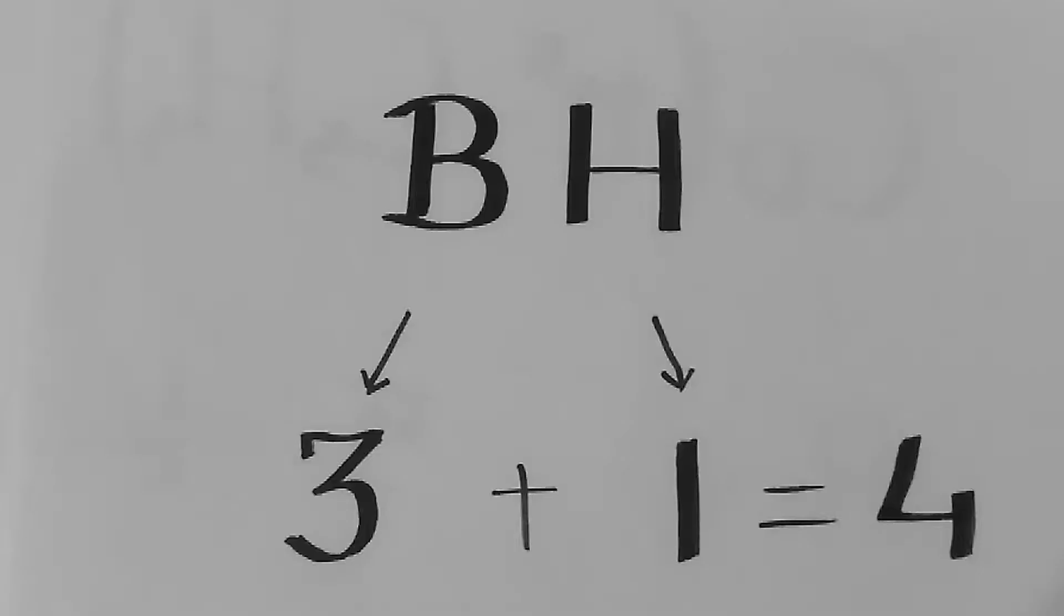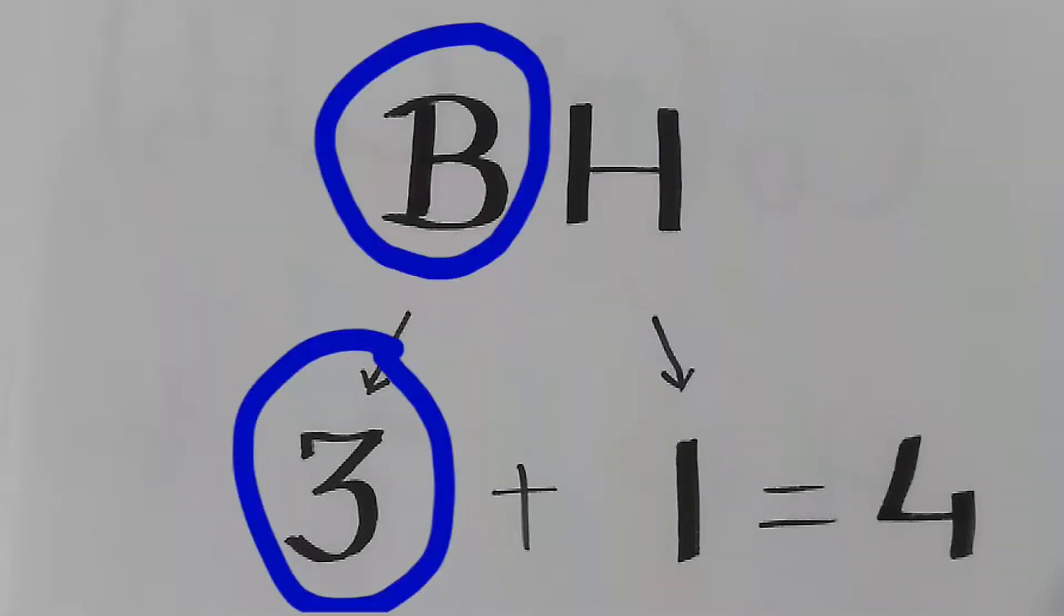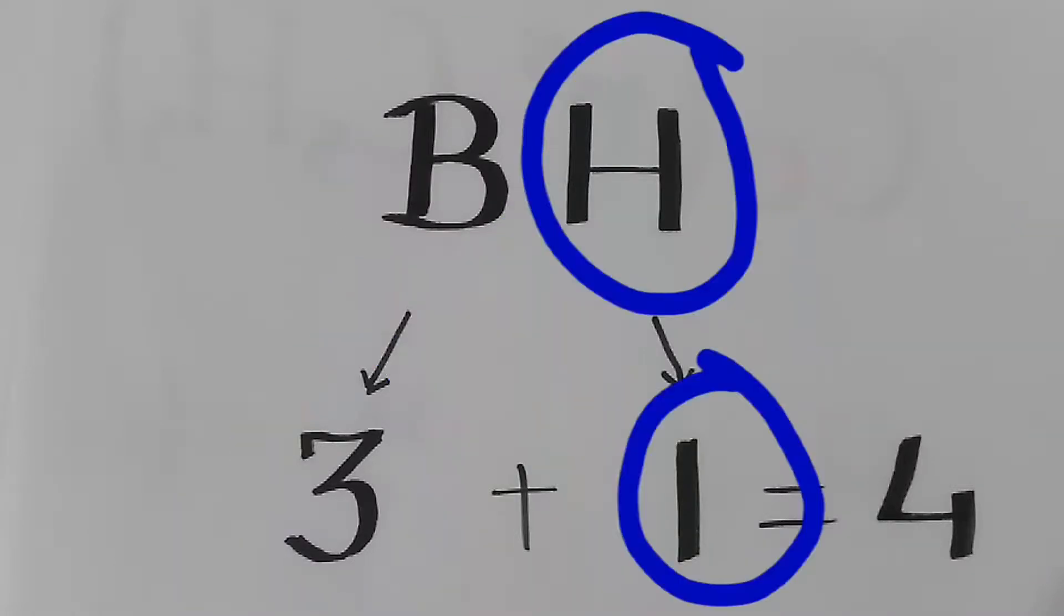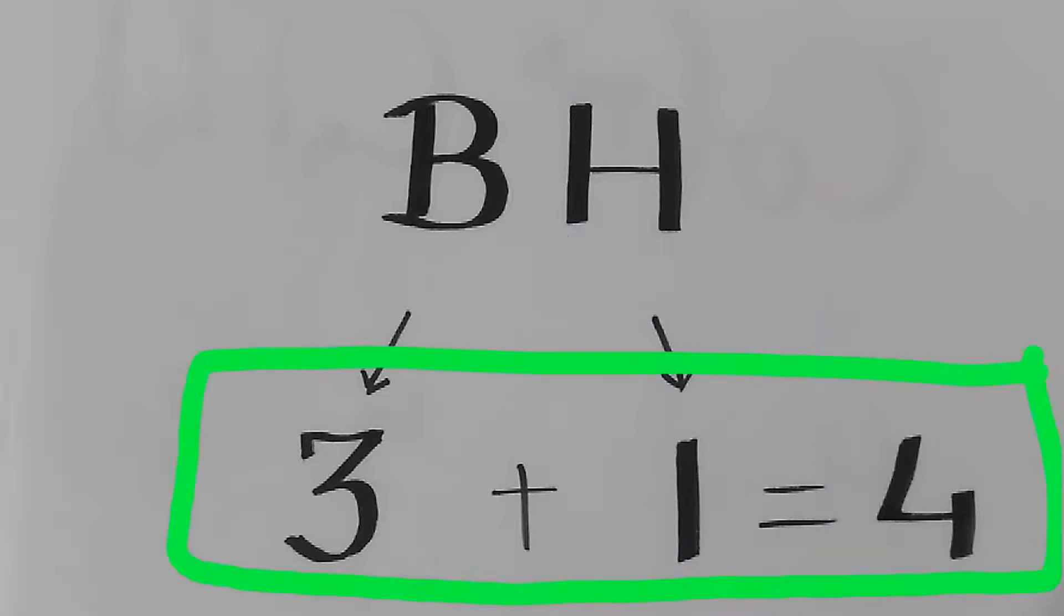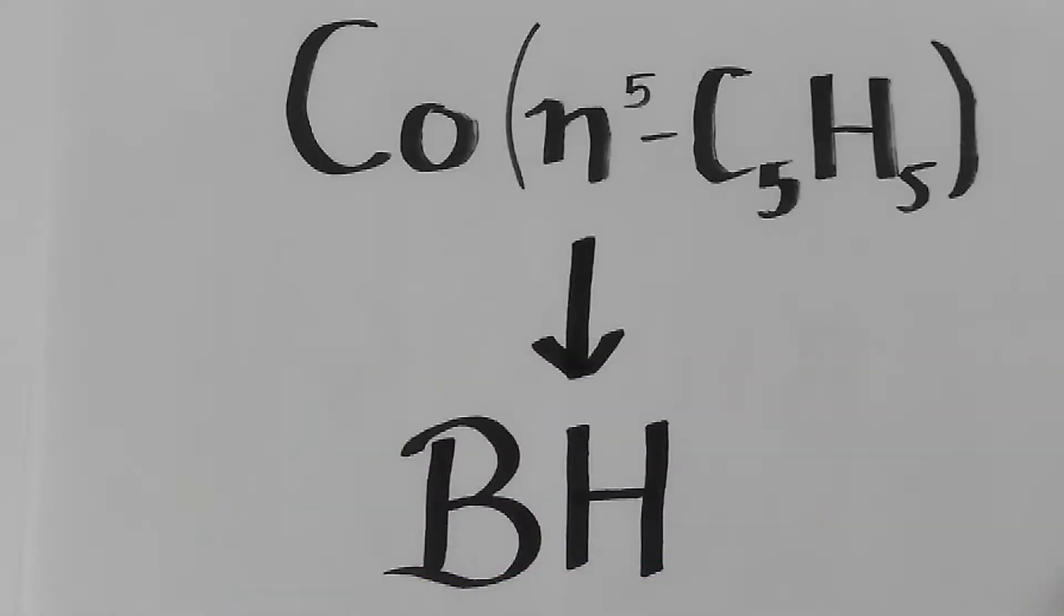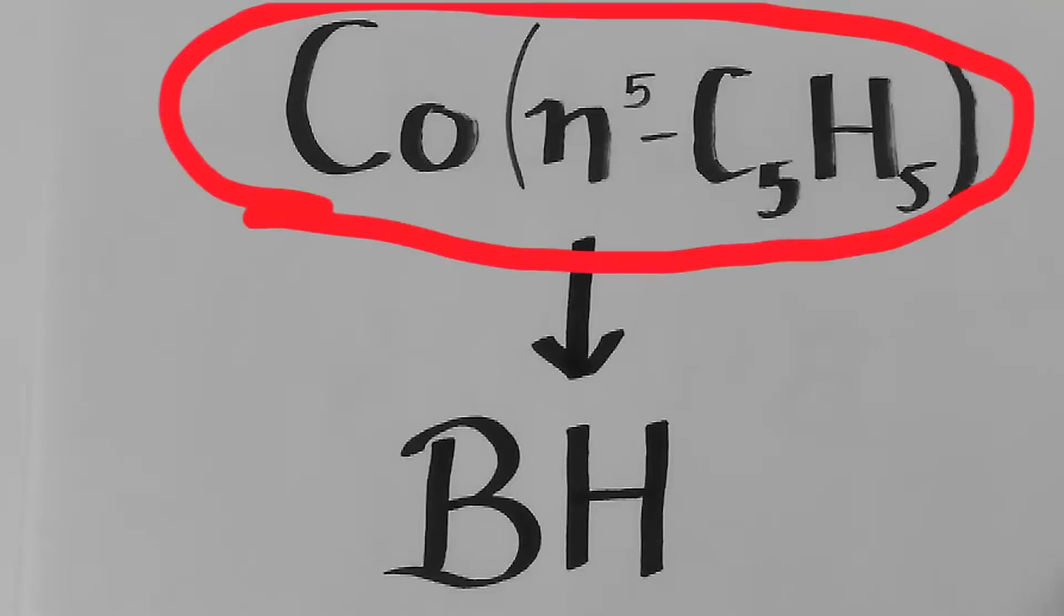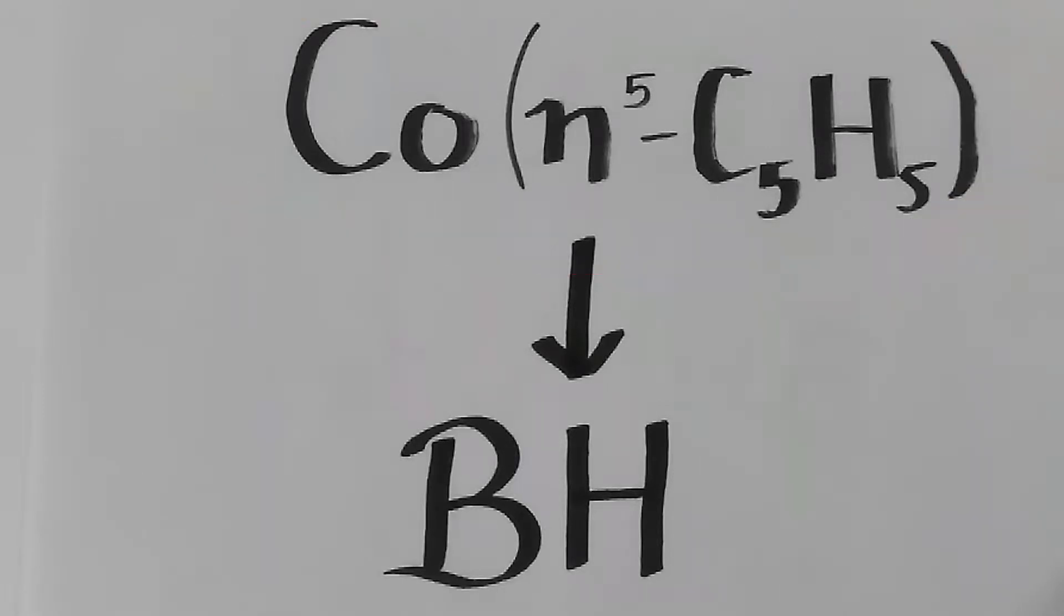Subtracting 10 from 14 we get 4 electrons, so we can replace it with BH molecule since B has 3 valence electrons and hydrogen has 1 valence electron which sums up to 4. So, the isolobal analogy for this complex is BH.